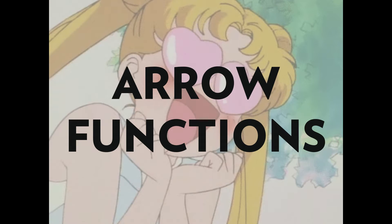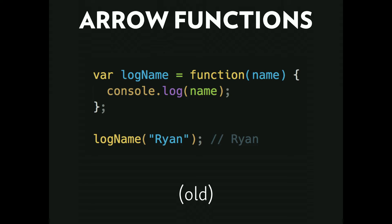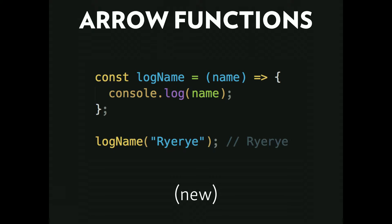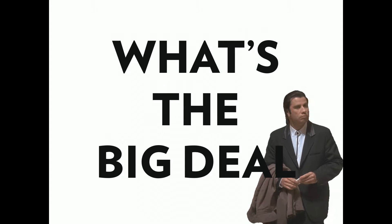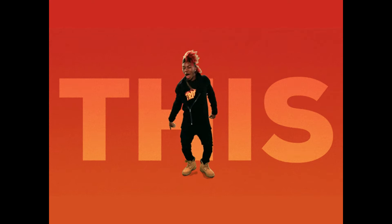Now here's one of my favorite things: arrow functions. They're super sweet and pretty similar to CoffeeScript if you're familiar with that. The old way: var logName = function(name) { console.log(name); }. With an arrow function, you eliminate the word function, keep your parameter, and use what people call a fat arrow — equals greater-than. So: const logName = (name) => { console.log(name); }. What's the big deal? Why are they so cool? The answer is the this keyword.